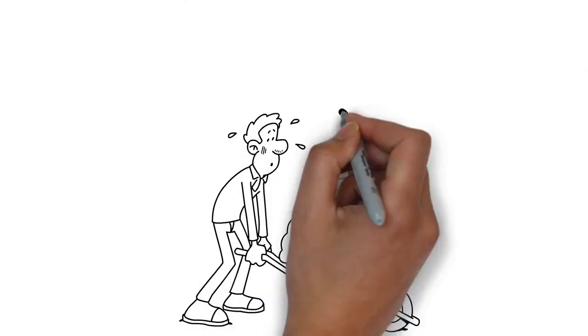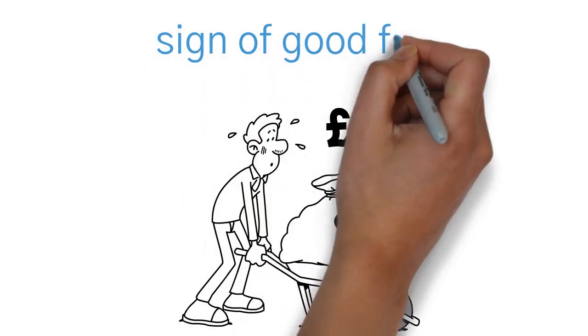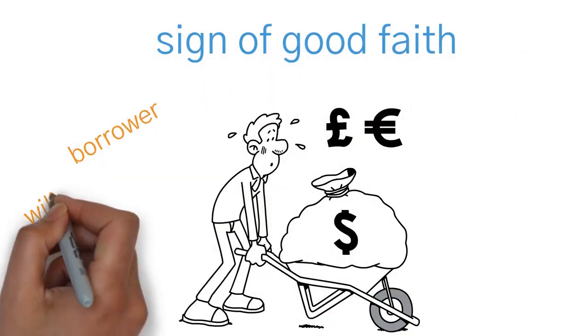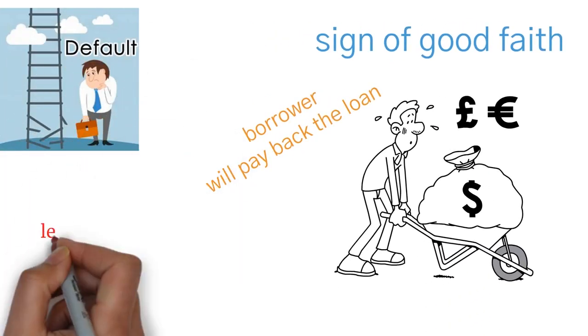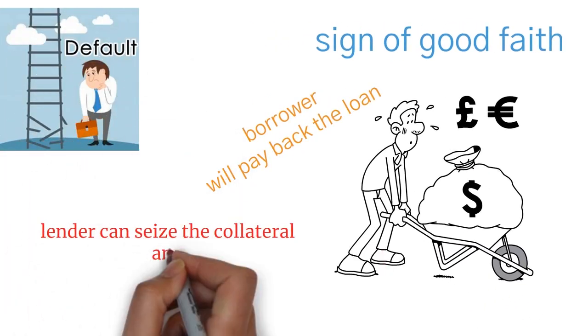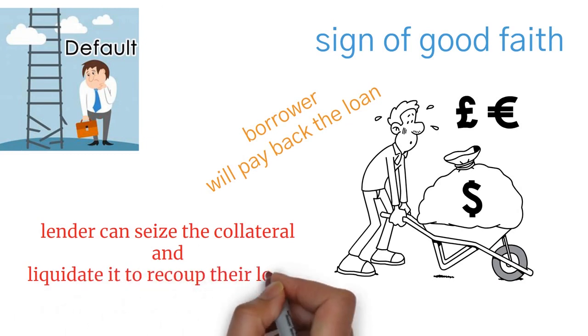When a borrower puts up collateral, it is a sign of good faith that the borrower will pay back the loan. If a borrower defaults on the loan, then the lender can seize the collateral and liquidate it to recoup their losses.